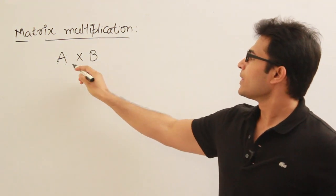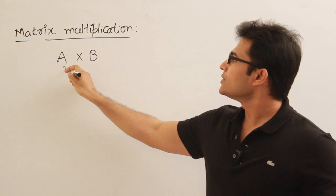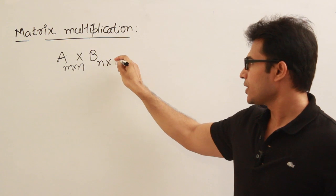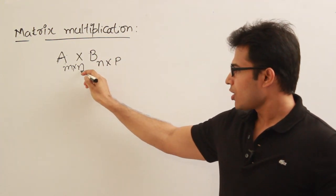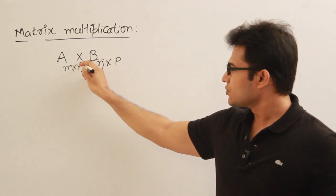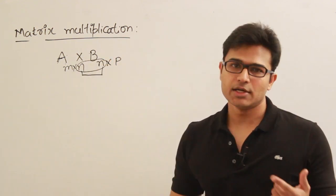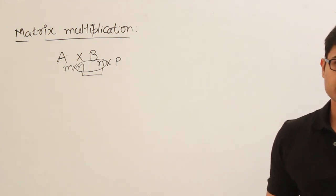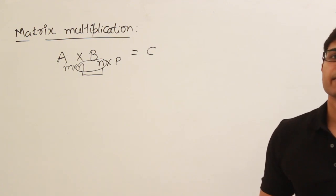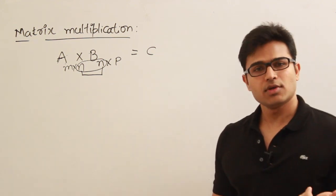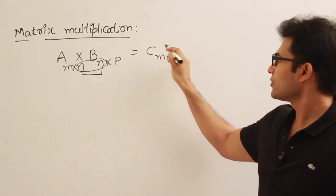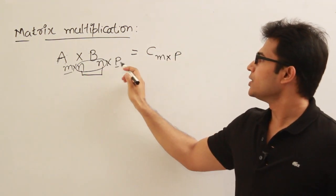For example, if the order of A is M by N and the order of B is N by P, then the number of columns in A is equal to the number of rows in B — which means these two are equal. Then only we can multiply them; otherwise multiplication is not possible. The resulting matrix C will be of order M by P.